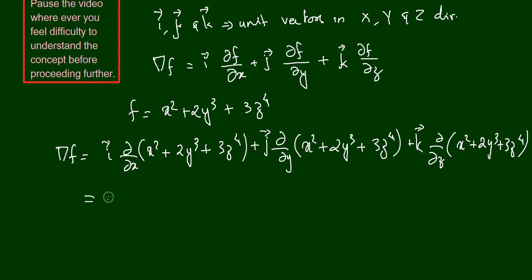The function has three terms: the first is a function of x, the second of y, and the third of z. Since this is partial differentiation, when we differentiate with respect to x, it acts only on the first term because the other terms don't contain x. So ∂/∂x of (2y³ + 3z⁴) = 0. Therefore i times ∂/∂x of x² gives us i times 2x.